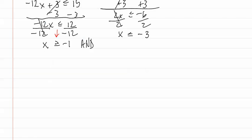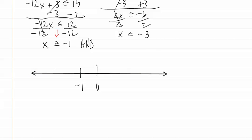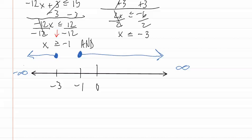We are now going to graph this. We mark zero, negative one, and negative three on the number line and draw each of the inequalities. For x greater than or equal to negative one, we have a filled-in dot at negative one going in the positive infinity direction. For x less than or equal to negative three, we fill in the dot at negative three and go towards negative infinity. As you can see, none of the lines overlap, which means there is no solution. This is because an 'and' statement must have an overlap, or show values which make both inequalities true.